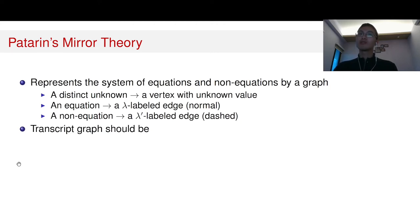Then the transcript graph should satisfy the following properties. First, it shouldn't contain a cycle. For example, if we have this case, then here it says the distance between those two nodes is equal to lambda_1, while this also says that the distance between those two nodes is equal to lambda_2, which is inconsistent.